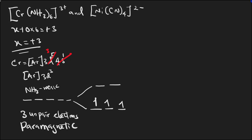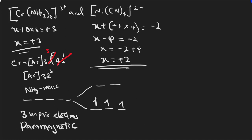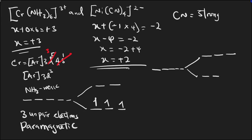Now for the nickel complex with cyanide ligands: x + (−1 × 4) = −2, so x − 4 = −2, giving x = +2. That's the oxidation state of nickel. Cyanide is a strong field ligand, and the geometry of this complex is tetrahedral because there are four ligands. We'll use tetrahedral splitting.